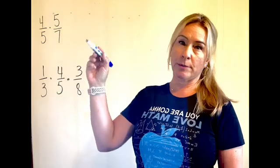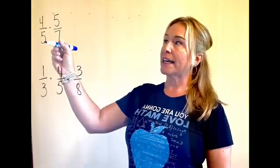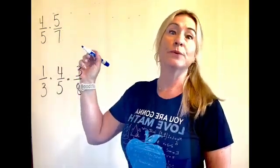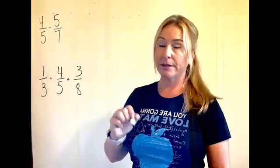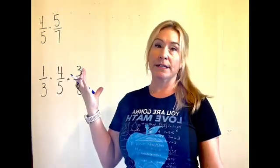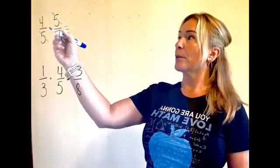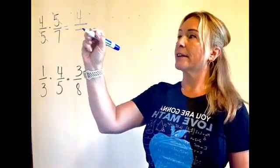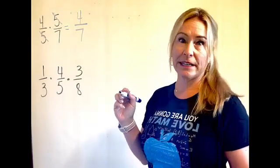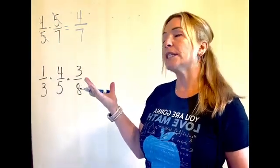When you have fractions that are being multiplied, you can look diagonally and reduce before you multiply. I like to call it a cancel party. These 5s can cancel out, leaving you with a 4 on the numerator and a 7 on the denominator. Pretty easy. Pretty awesome.